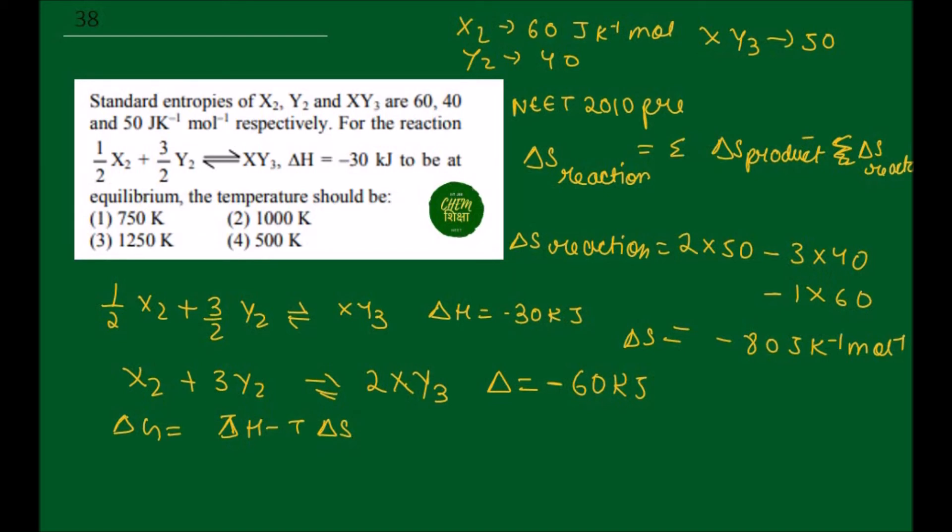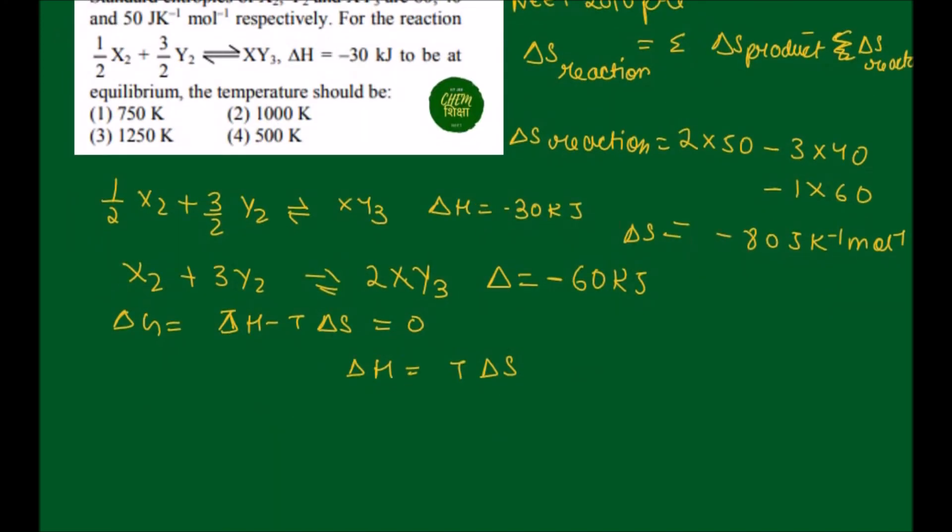At equilibrium, delta G equals delta H minus T delta S equals zero. So delta H equals T delta S. Delta H value is given in kilojoules, but we've calculated delta S in joules, so we'll multiply by 1000. So minus 60 times 1000 equals minus 80 times temperature T.